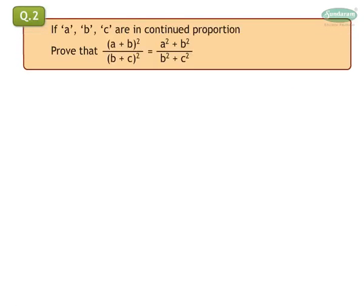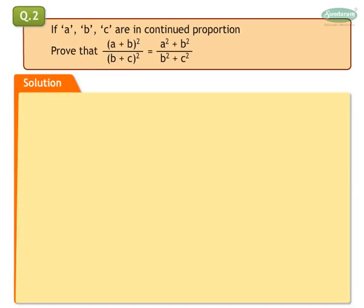If A, B, C are in continued proportion, then show that (A plus B) whole square upon (B plus C) whole square is equal to A square plus B square upon B square plus C square. Solution. We write the numbers in ratio form. Hence, A upon B is equal to B upon C. Let us assume each ratio is equal to K. Hence, B is equal to CK and A is equal to BK.